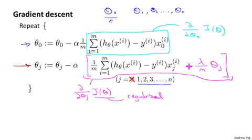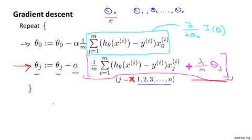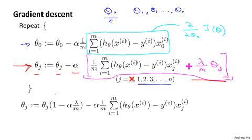If you look at the update for theta j, it's possible to show something pretty interesting. Concretely, theta j gets updated as theta j minus alpha times, and then you have this other term here that depends on theta j. So if you group all the terms together that depend on theta j, you can show that this update can be written equivalently as follows. And all I did was that theta j here is theta j times 1, and this term is lambda over m. There's also an alpha here, so you end up with alpha lambda over m multiplied into theta j.